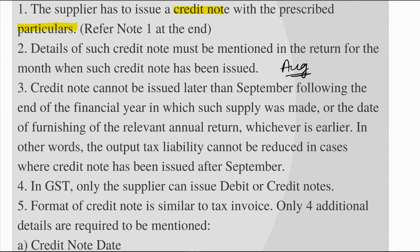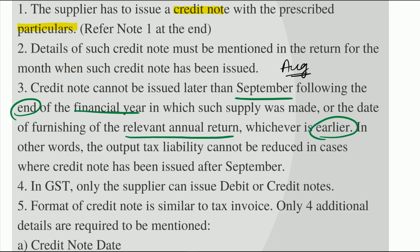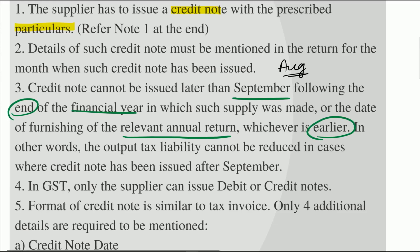A credit note cannot be issued later than September following the end of the financial year in which such supply was made, or the date of furnishing of the relevant annual return, whichever is earlier. Let us discuss this with a simple example.